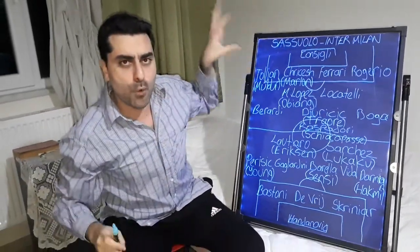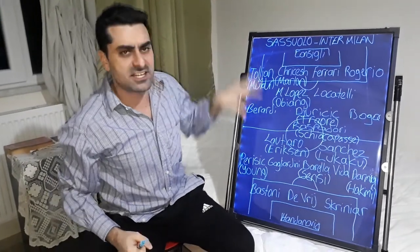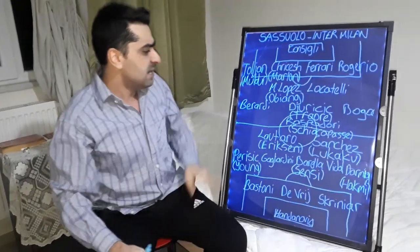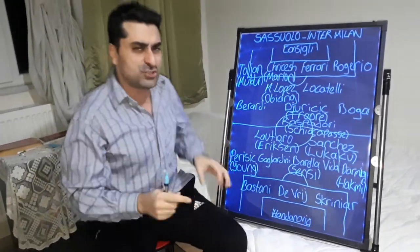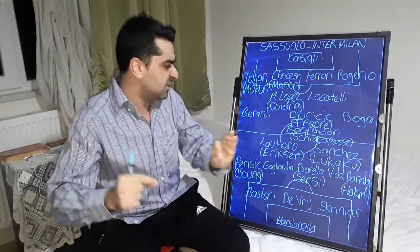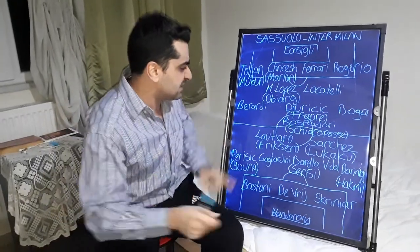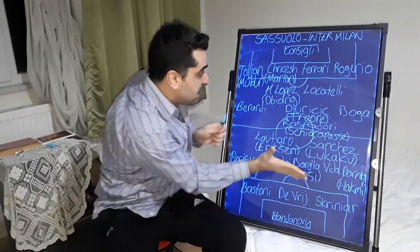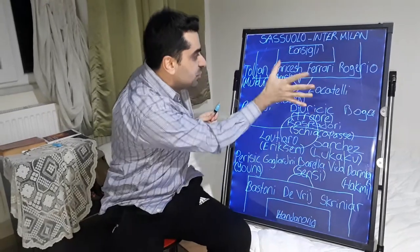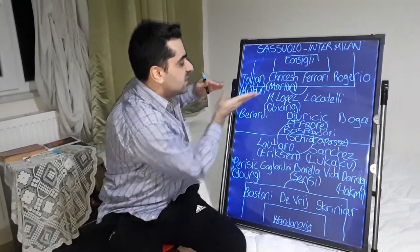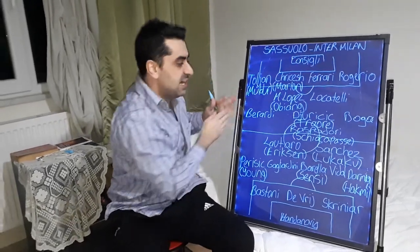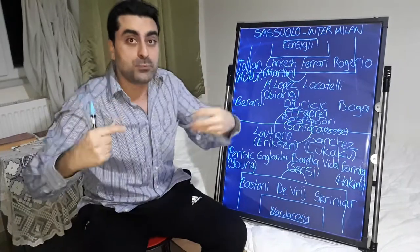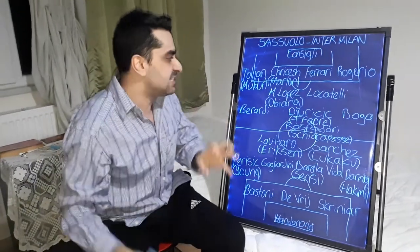Inter Milan won 3-0 against Sassuolo in an away game. In the first half, Inter started the game better and faster. Lautaro Martinez and Alexis Sanchez made pressure on Sassuolo's defense and forced them to make mistakes.